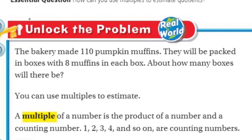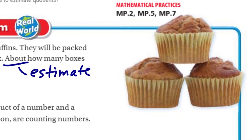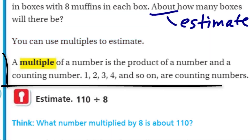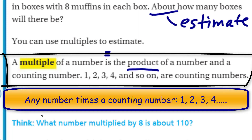It says the bakery made 110 pumpkin muffins. They will be packed in boxes with eight muffins in each box. About how many boxes will there be? The key word is the word about — that should be like a red flag saying we want an estimate. It says you can use multiples to estimate, and it defines the word multiple. A multiple of a number is the product of a number and a counting number. Some people might be like: that's really confusing.